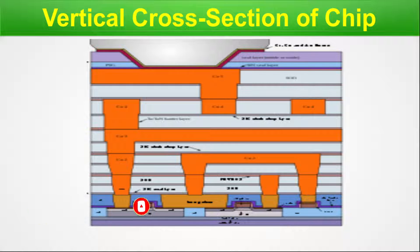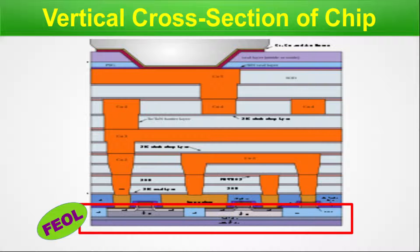Vertical cross section of chip. Here you can see the vertical cross section of a chip, taken from Wikipedia. Let me point out where the different end of line processes reside. Here resides the FEOL part — it's the fabrication of the transistor and other active or passive devices on silicon.